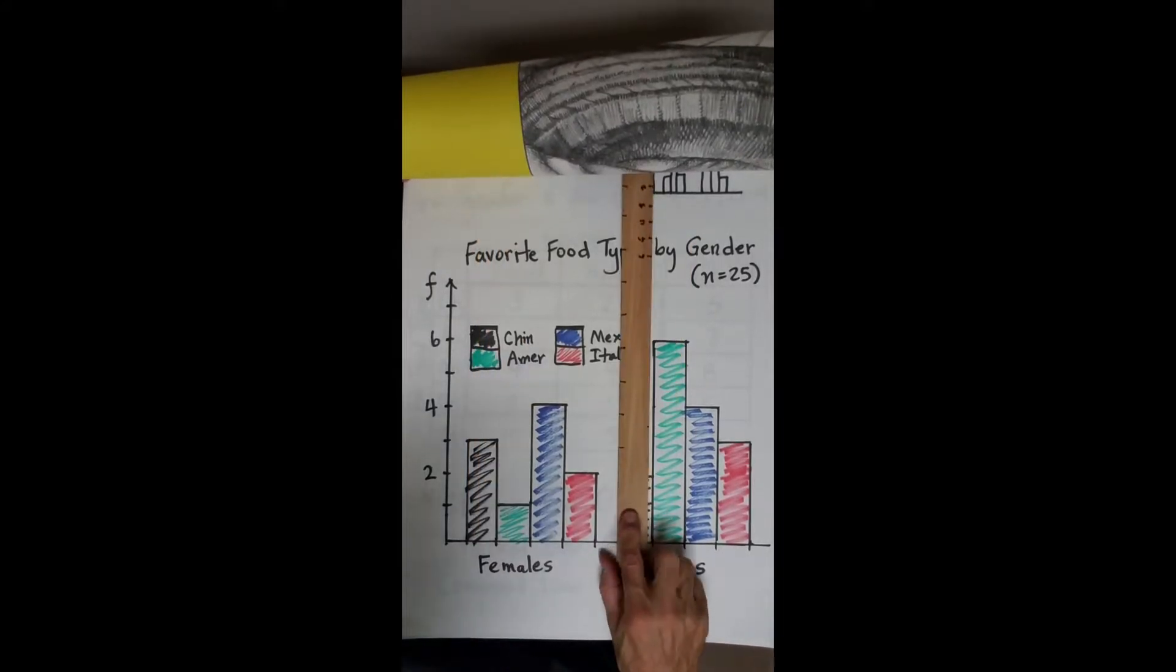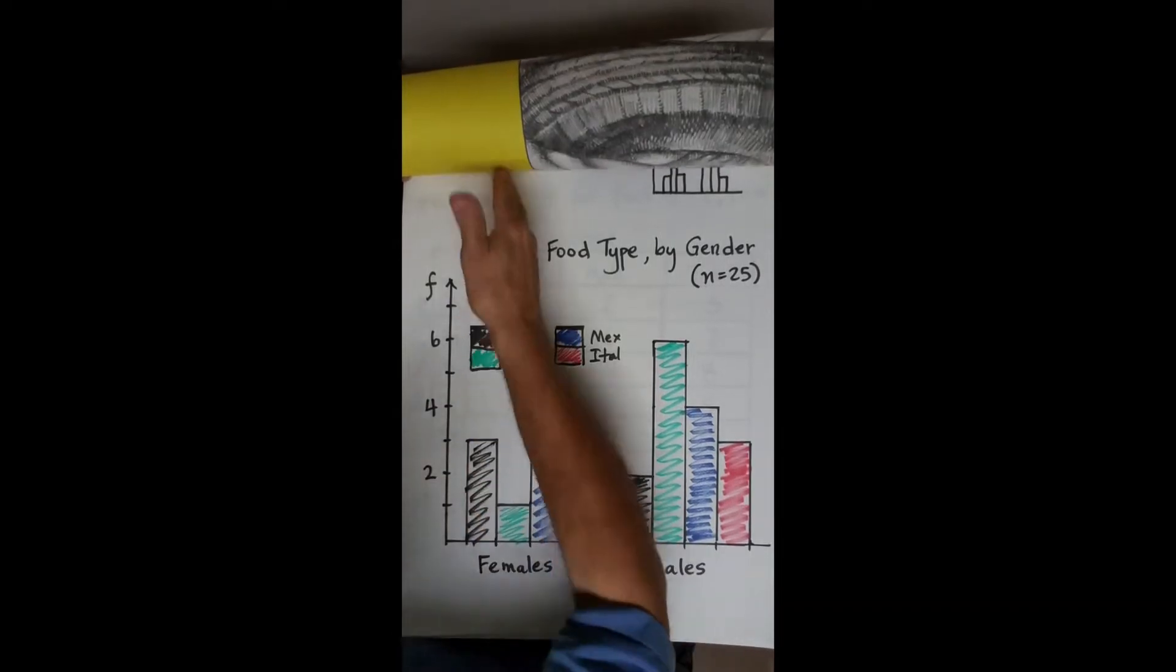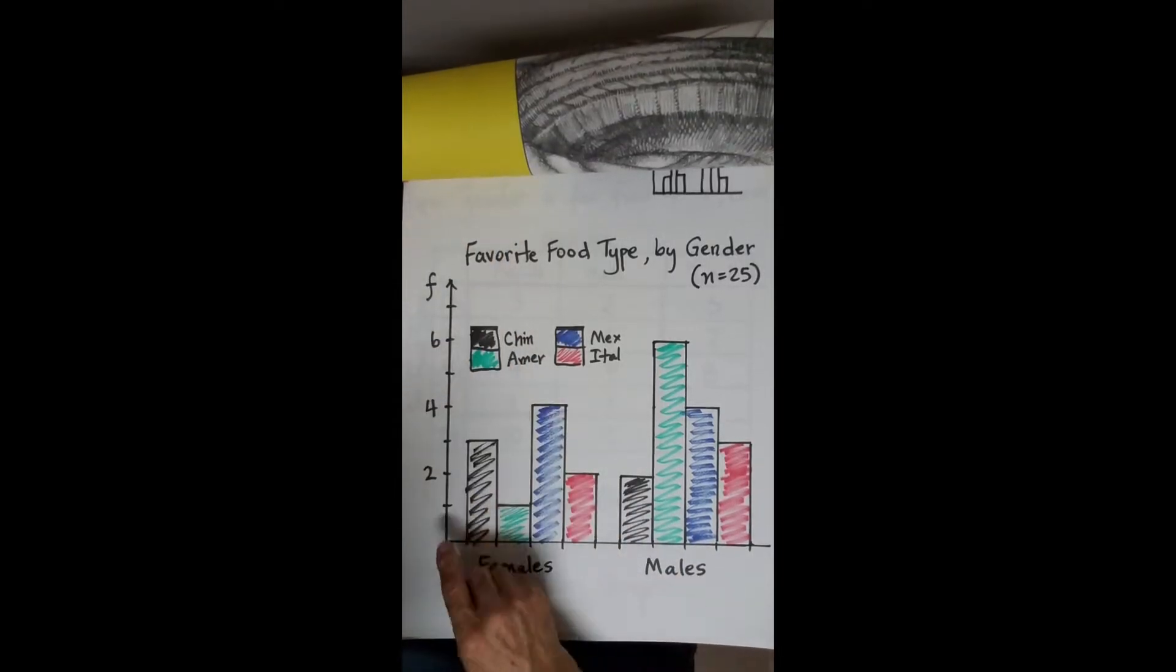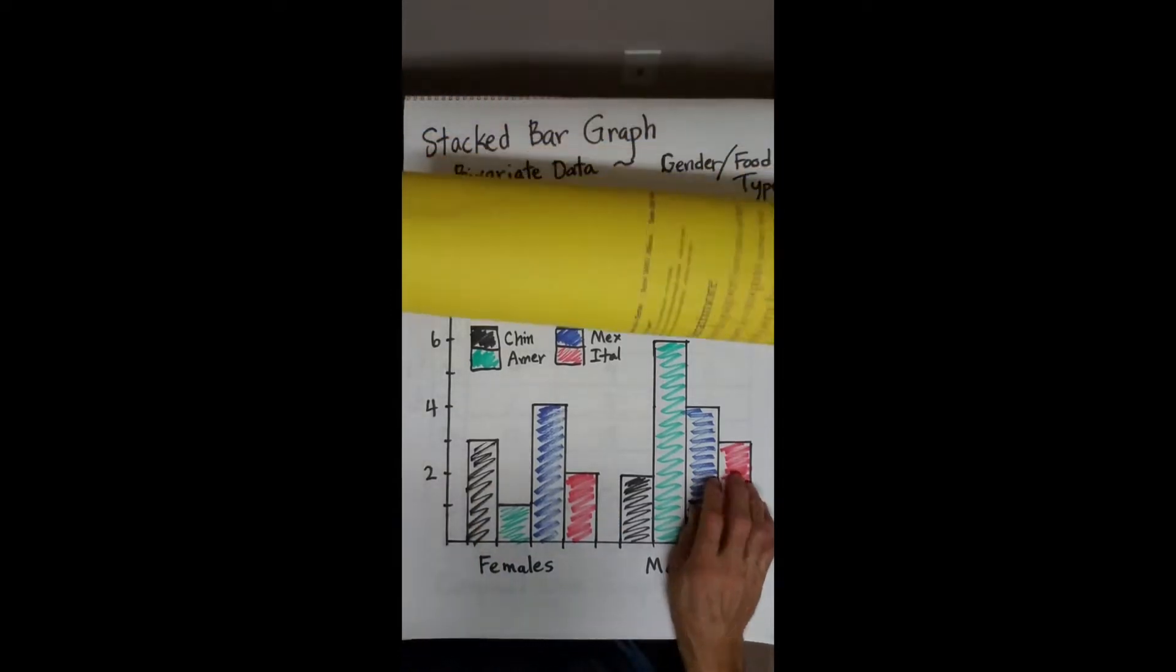And the same thing for males. So a stacked bar graph is very, very vertical. It can be drawn horizontally but I'm going to draw it vertical. It's going to change our scale some. So using these same numbers, let's see what we can do.